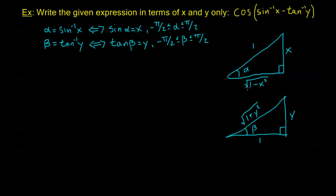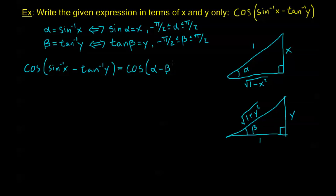Now that we have this information, we're ready to solve the problem. Cosine of sine inverse x minus tangent inverse y equals, with our substitutions, cosine of alpha minus beta, where alpha and beta are the angles in our triangles. Plugging into our subtraction formula for cosine, this equals cosine alpha times cosine beta — and remember, when we have subtraction in the argument of cosine, we get addition on the other side — plus sine of alpha times sine of beta.